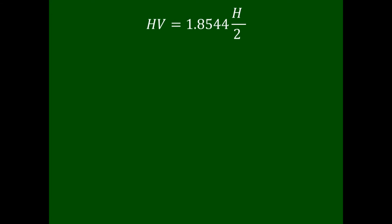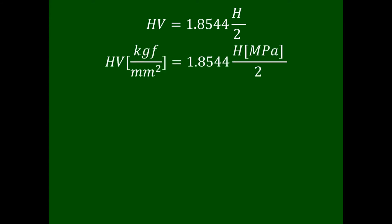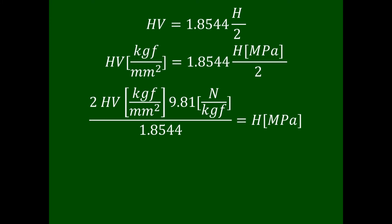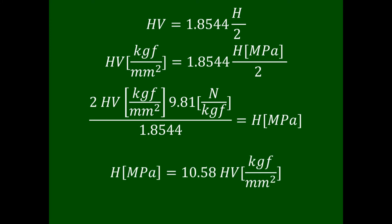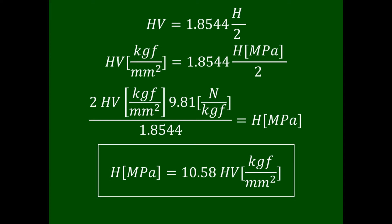Vickers hardness is generally given in kilograms force per millimeter squared, while nano hardness is generally given in Pascal. So to make the equation more useful, we multiply by 9.81 newtons per kilogram force, shuffle around a few constants, and find that to calculate the nano hardness in megapascal from the Vickers hardness value in kilogram force per millimeter squared, we simply multiply by 10.58.